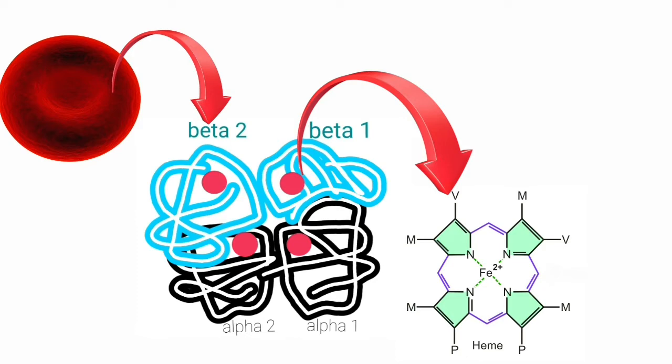For the binding of oxygen, the iron atoms present in each of the four heme groups must be in the ferrous state. The only difference between hemoglobin and methemoglobin is that one or more of the four iron atoms in the methemoglobin molecule are in the ferric state rather than ferrous state. Because of this, these methemoglobins are incapable of binding oxygen.